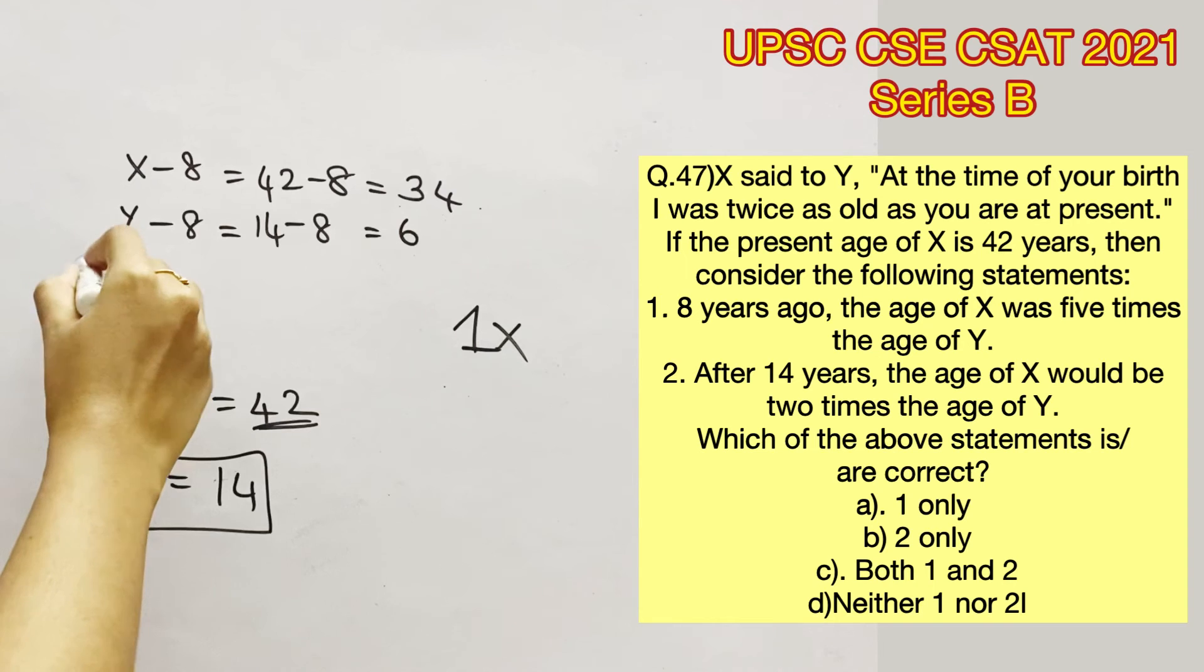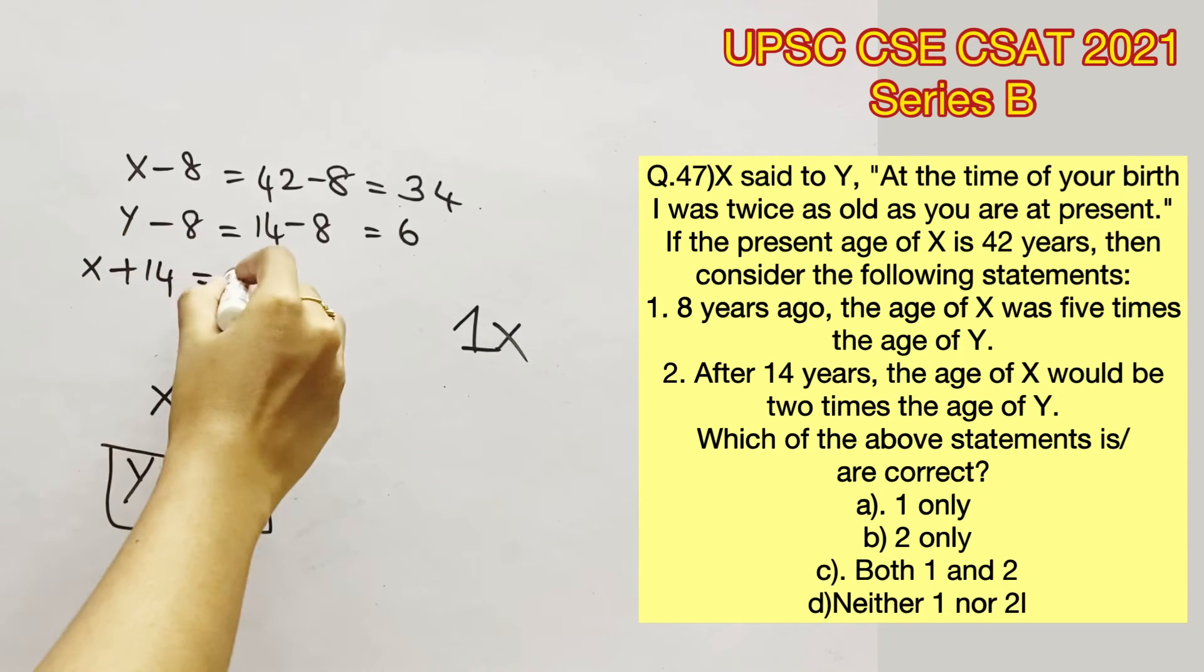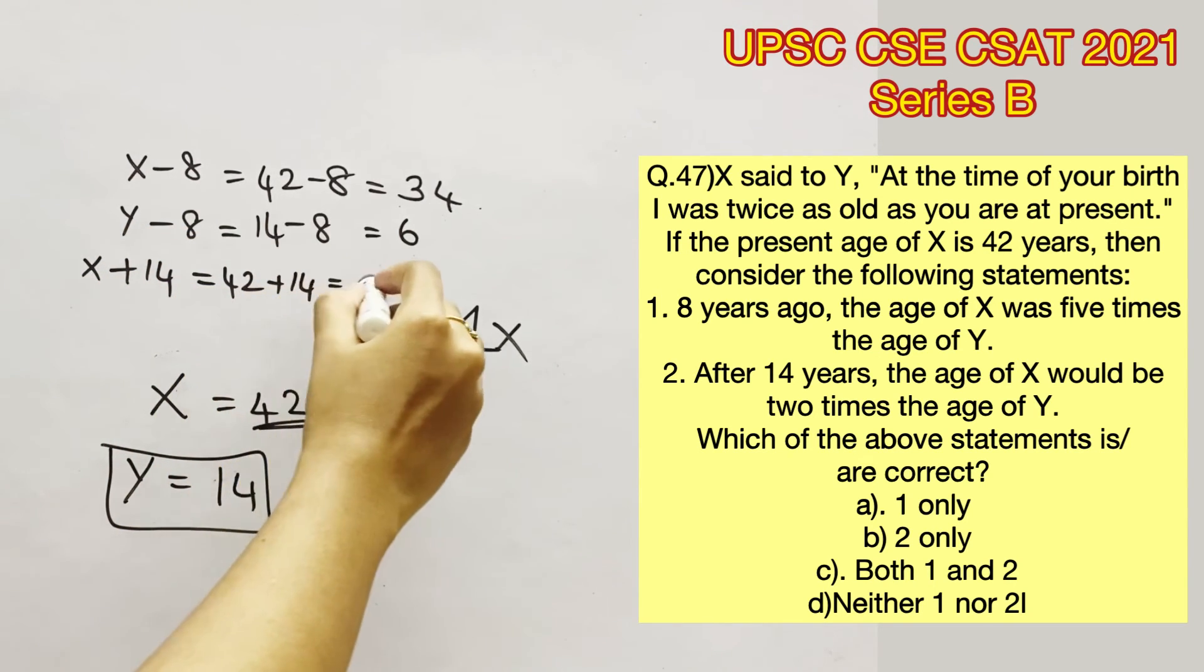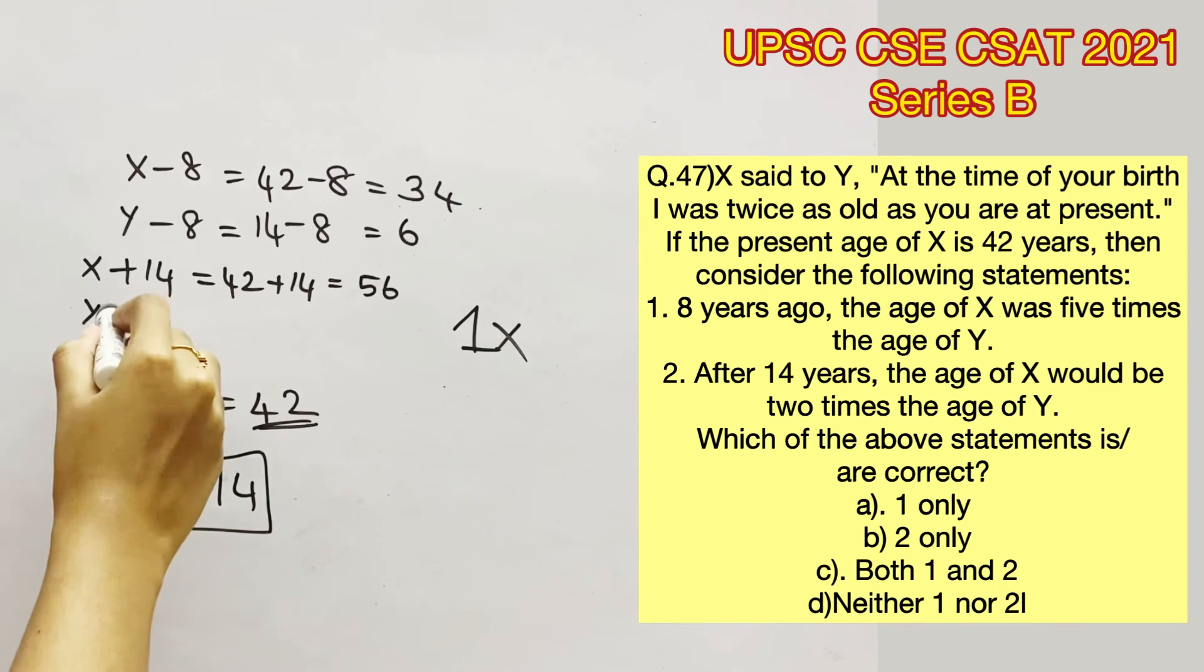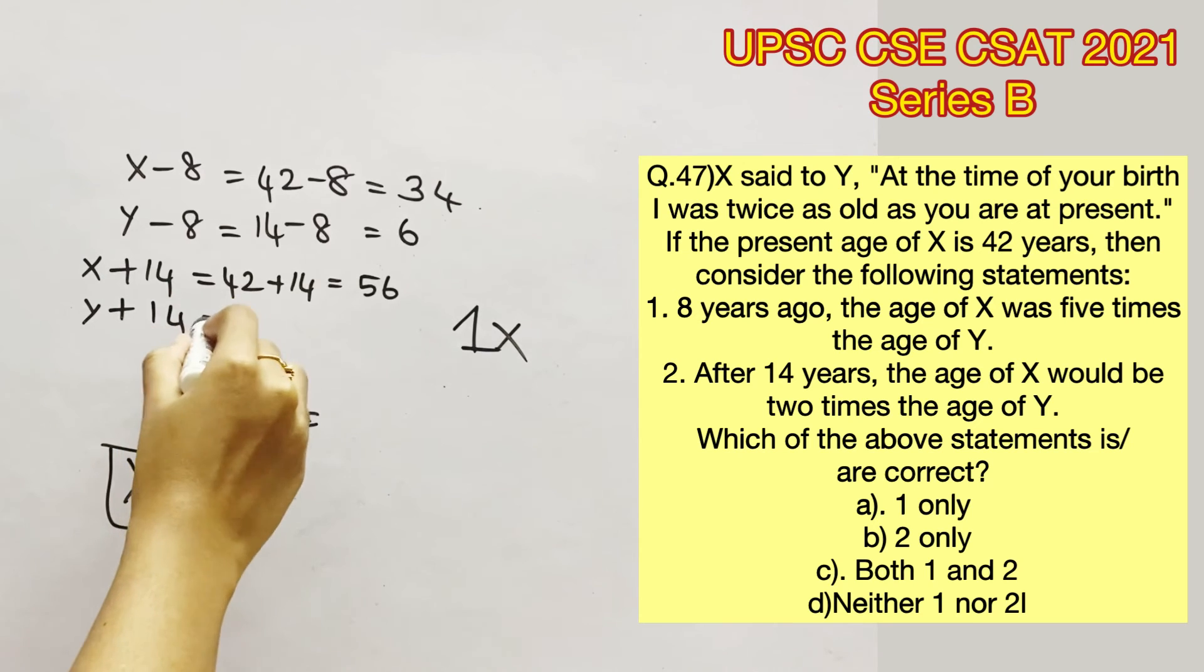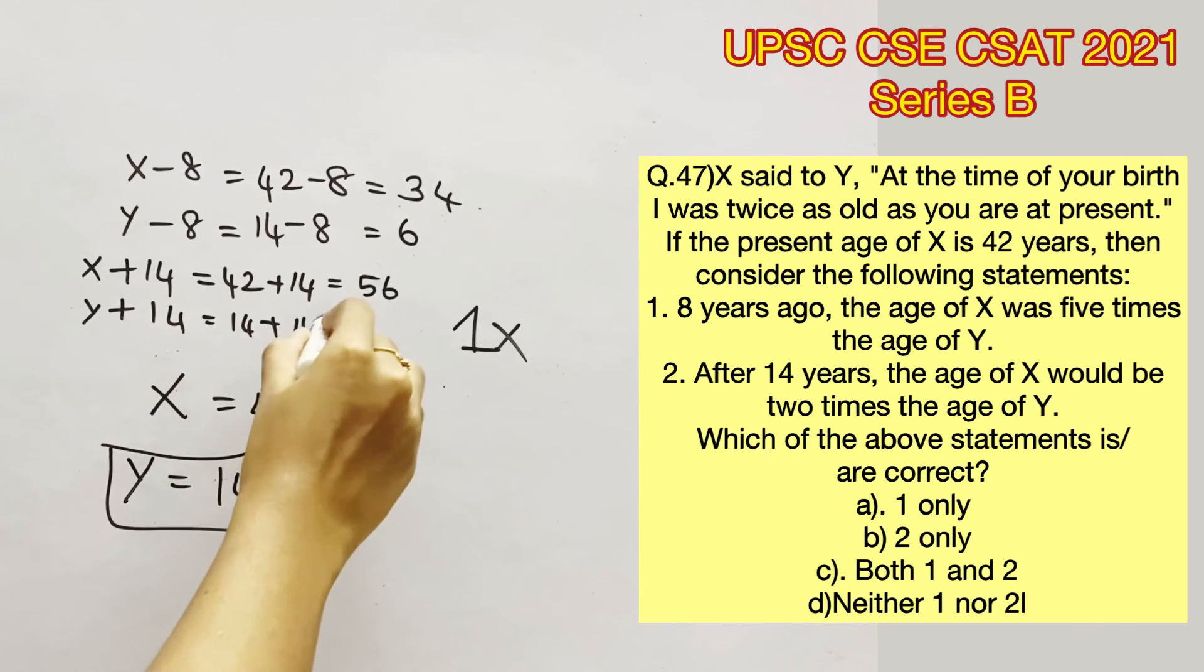Statement 2 says, after 14 years, the age of X would be 2 times the age of Y. So after 14 years would be 42 plus 14, which is 56. Y's age would be 14 plus 14, that is 28.